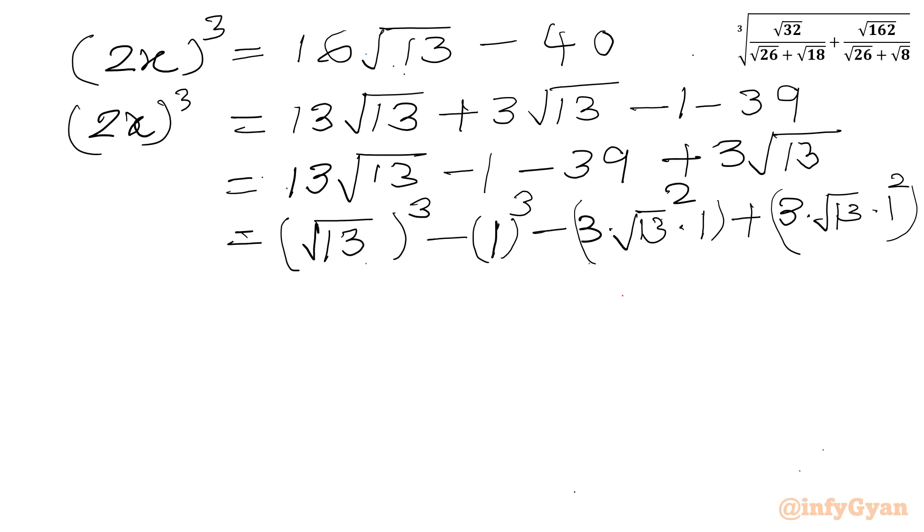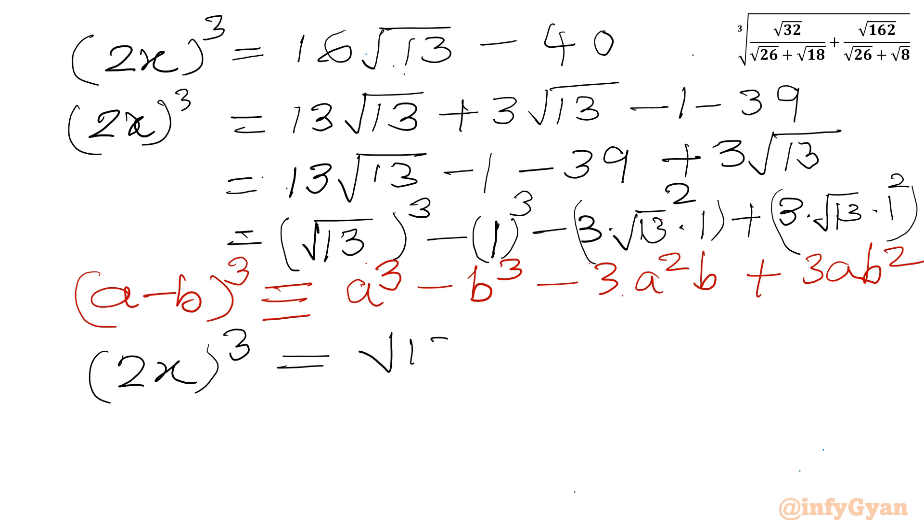So it is recalling one algebraic identity A minus B whole cube. Let me write here, A cube minus B cube minus 3 A square B plus 3 A B square. So this we can write A minus B whole cube.